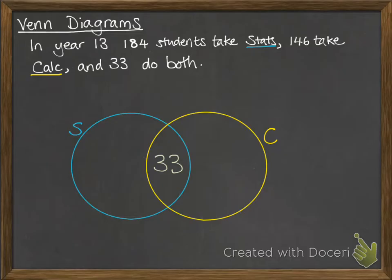So that 33 goes in the middle where they are taking both statistics and calculus. Now we have 184 students that are taking statistics. Now that includes students that are taking calculus as well. So the total for statistics is 184. If we take off that 33, then we'll get 151.